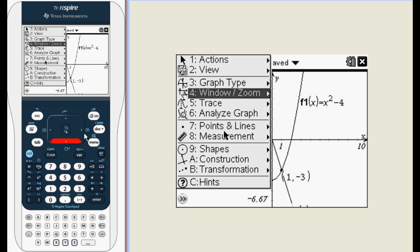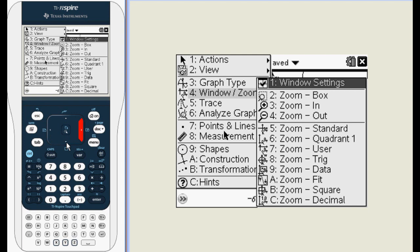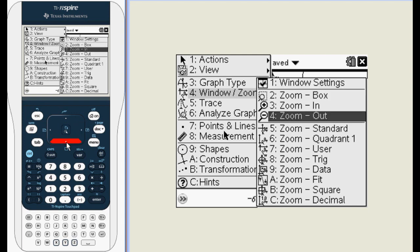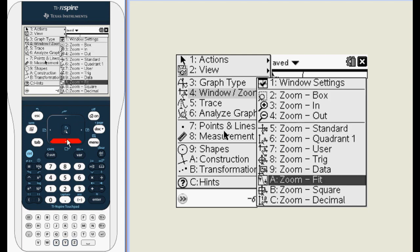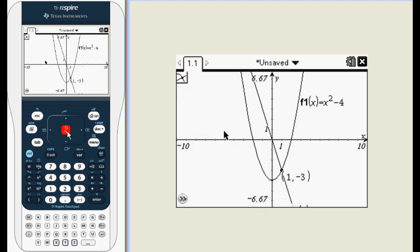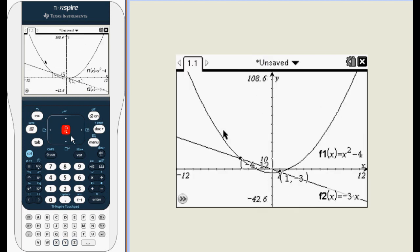In this case the easiest way to display the other intersection point is zoom fit. With zoom fit the Inspire will do its best to display the best picture possible of your functions.